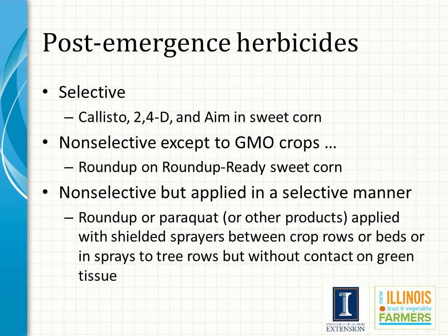Post-emergence herbicides applied within crop fields after the crop is standing may be selective, for example killing broadleaf weeds in a grass crop such as sweet corn, or they may be non-selective but applied to a resistant crop such as Roundup use in Roundup Ready corn and soybeans. Roundup and paraquat, both non-selective herbicides, also are used in perennial fruit crops to kill in-row weeds, but they are applied at a time and in a manner where they do not contact green tissue or damage the crop.